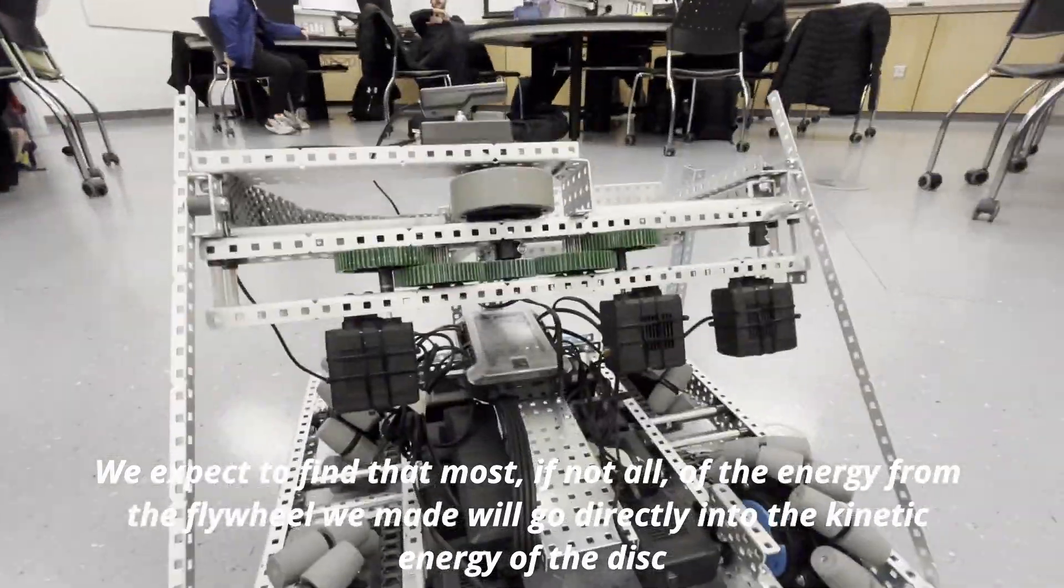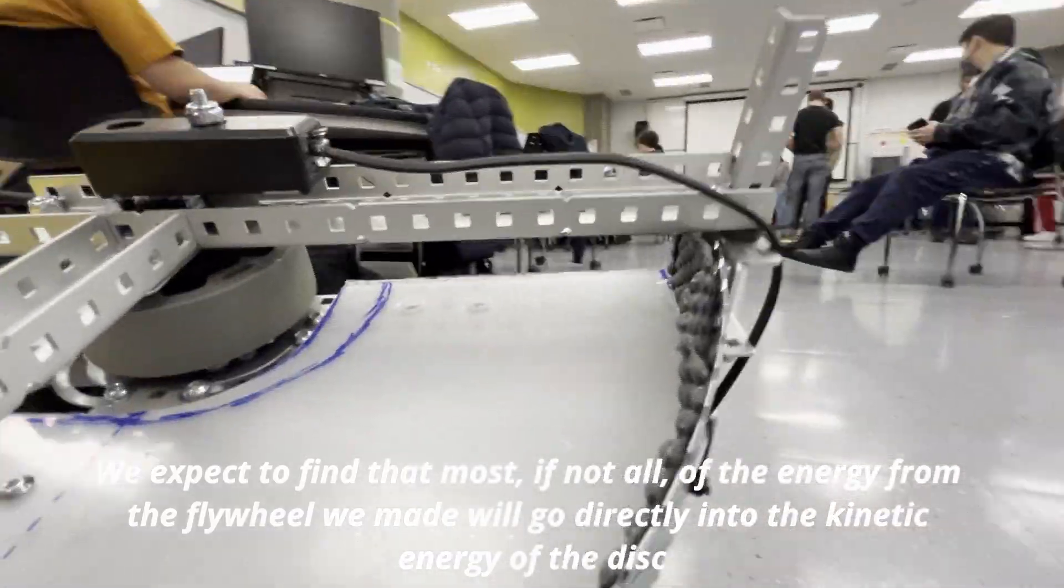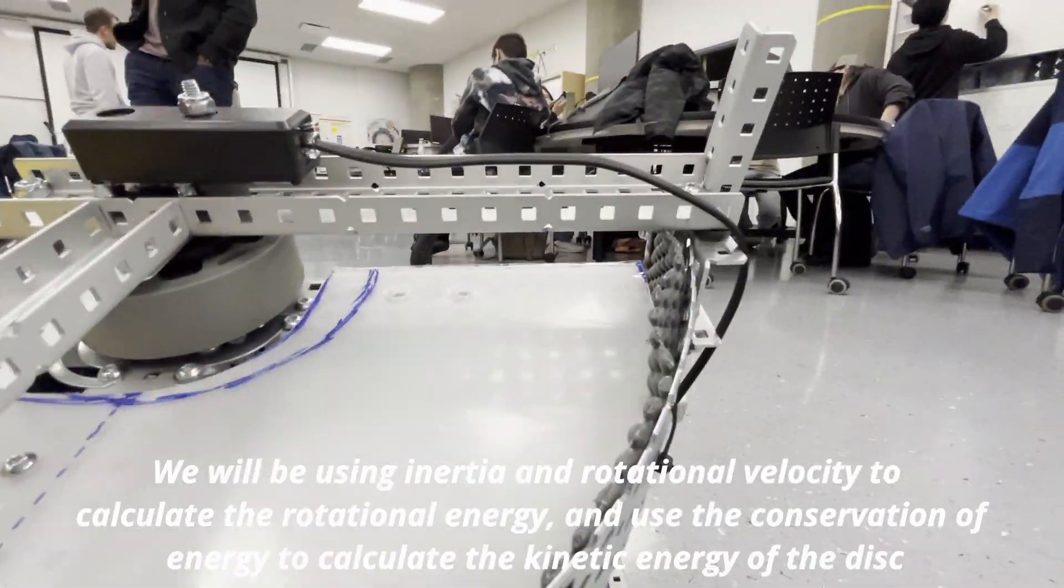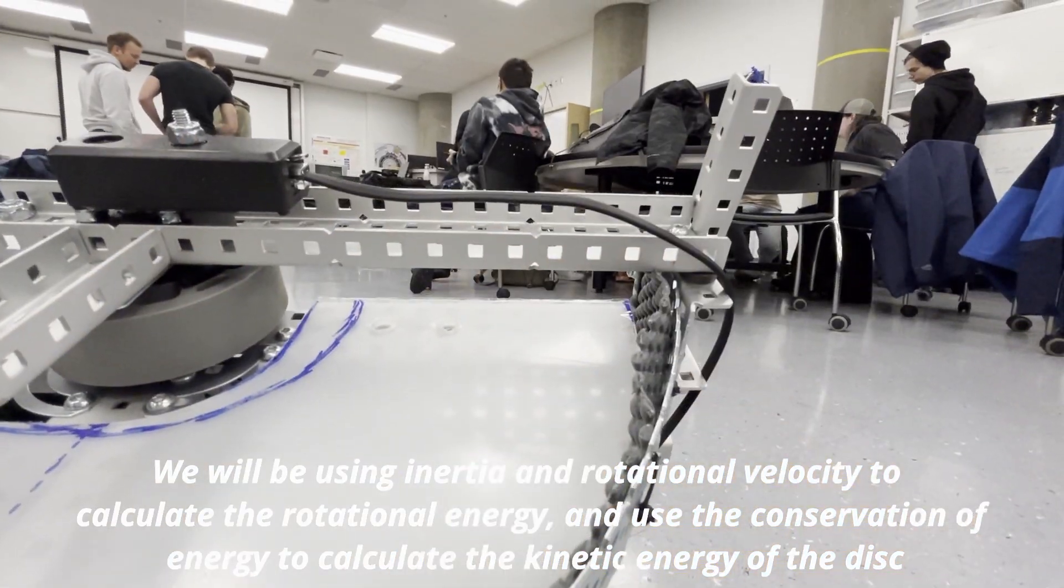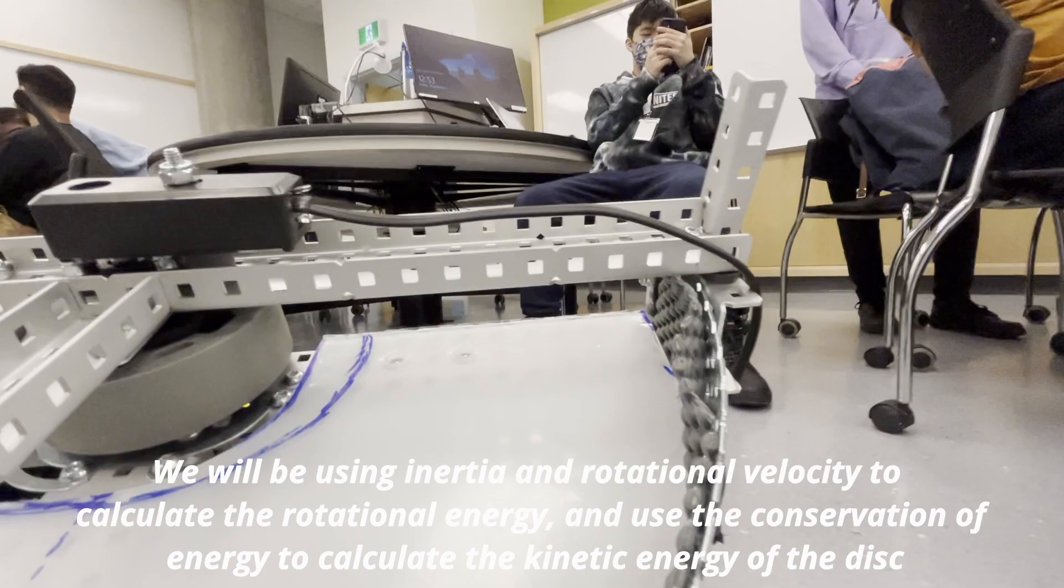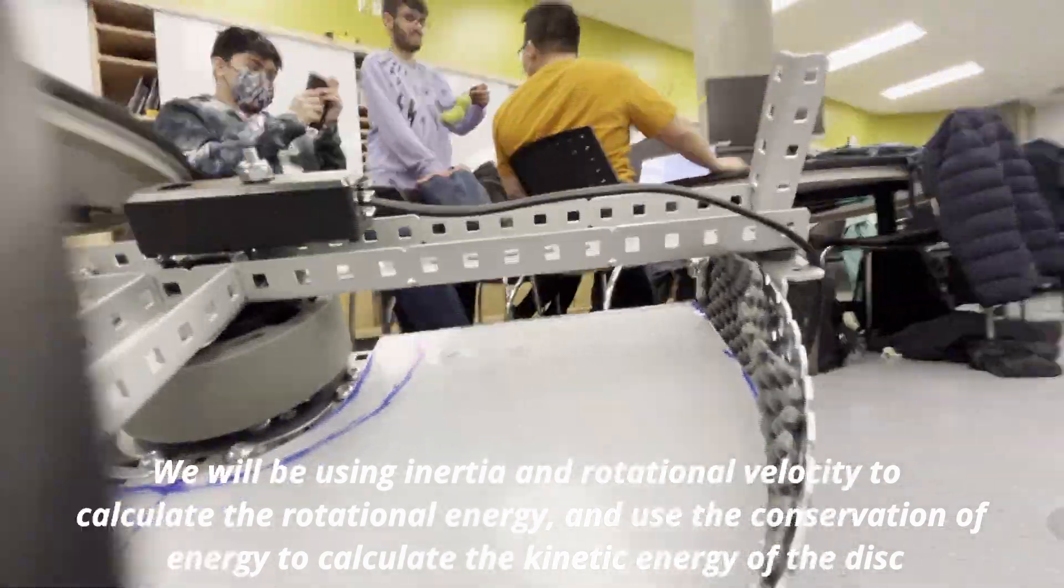We expect to find that most, if not all, of the energy from the flywheel we made will go directly into the kinetic energy of the disc. We will be using inertia and rotational velocity to calculate the rotational energy and use the conservation of energy to calculate the kinetic energy of the disc.